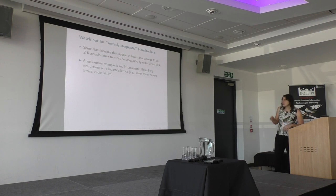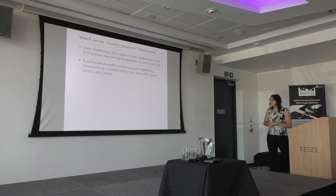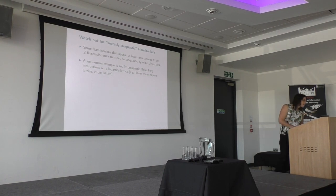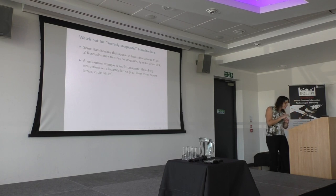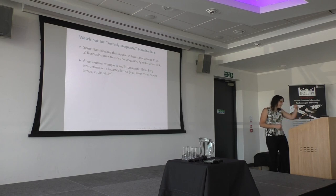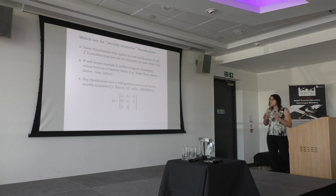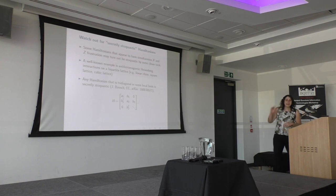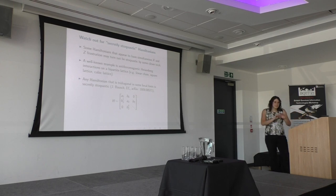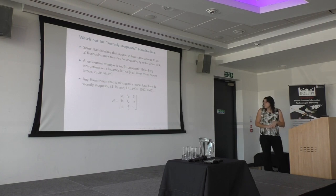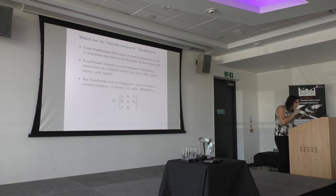A well-known example of a secretly stoquastic Hamiltonian is the anti-ferromagnetic Heisenberg model. It's anti-ferromagnetic and frustrated, but if it's on a bipartite lattice — a linear chain, square lattice, cubic lattice, or any bipartite graph where you can partition vertices into two sets with edges only between sets — it's actually secretly stoquastic. Similarly, every Hamiltonian that is tridiagonal in some local basis is also secretly stoquastic. These represent hopping on a line, and even with arbitrary complex matrix elements off-diagonal, they're hiding a stoquastic Hamiltonian after an appropriate transformation.